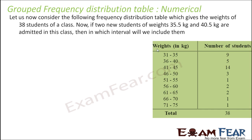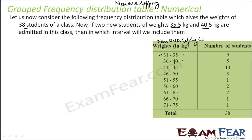Let's take a grouped frequency distribution table where all group classes are grouped and non-overlapping — ending at 25, starting at 36, ending at 40, starting at 41. This is a grouped frequency distribution table showing the weight of 38 students. Now, two students are to be added in the middle of the interval, whose weights are 35.5 and 40.5, but we can't add them here because the current distribution is non-overlapping.